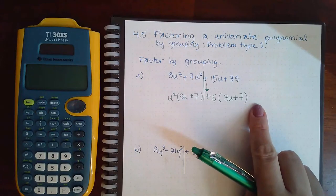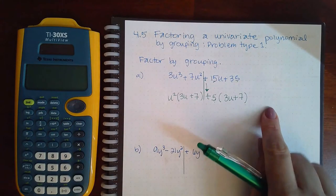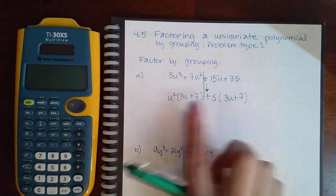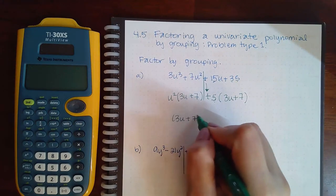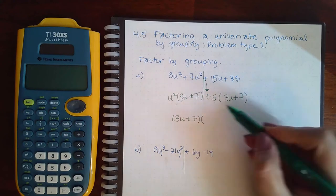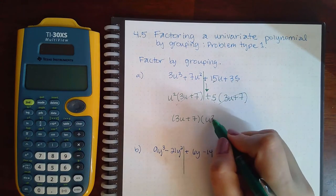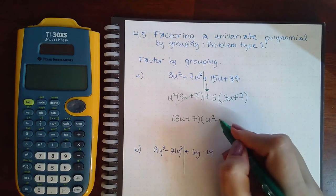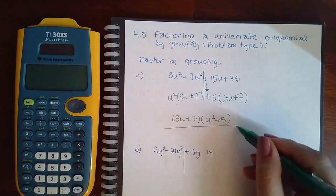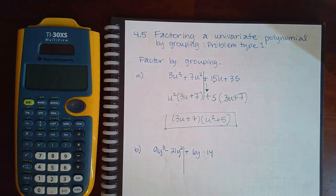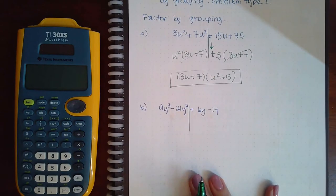Now if you look at this entire expression as a whole expression with two terms, right, for the two sides, they do have the 3u plus 7 in common. So if I factor that out what I'm left with is the u² on the outside here plus the 5 on the outside there, and now this is the factor.